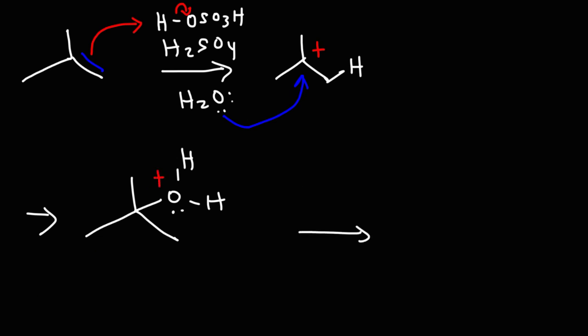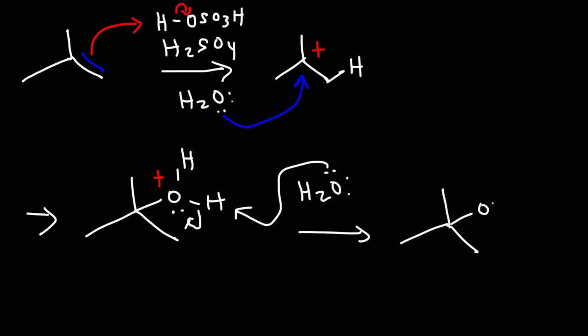In another step, another water molecule — or you could use HSO4⁻, but we're going to use water — is going to act as a weak base and remove a proton from this intermediate. The end result for this reaction is that we get an alcohol. In this example, we're going to get a tertiary alcohol. So that's the product of an alkene with water and sulfuric acid — the acid-catalyzed hydration — and it produces alcohols.